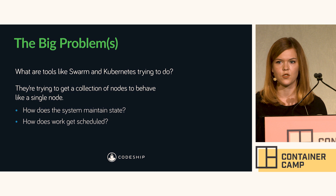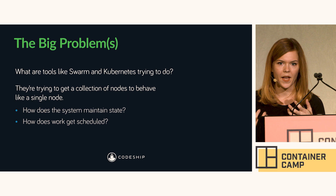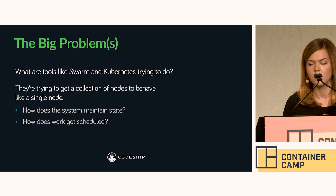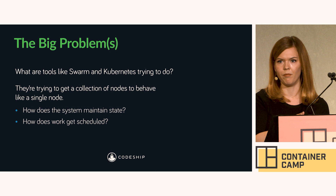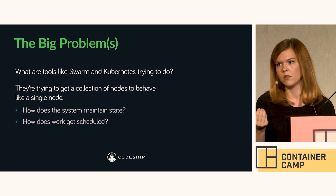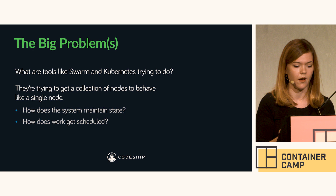These tools are trying to make a huge cluster of nodes — or even a small cluster of nodes — behave like one single entity. That presents a couple problems, all of which are solved with the various algorithms and tools that are part of an orchestration system. How does the system maintain state? If a request gets routed to one node, how does the other node know what happened, and how is state maintained in a distributed system? And how does work get scheduled? If I ask for some Redis instance to be fired up, how does the system know which node has capacity and decide where it gets scheduled?